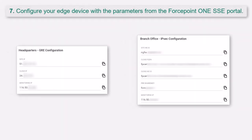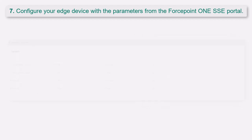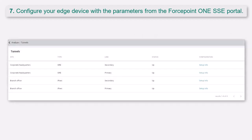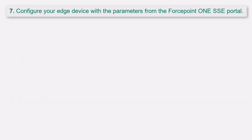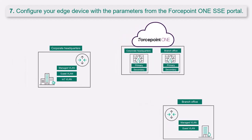Next, you configure the tunnels on the supported edge device at your location using the parameters from the Forcepoint ONE SSE portal. Access the tunnel information on the Analyze, Tunnels page. You can configure each site to use either GRE or IPSec to set up the tunnel.